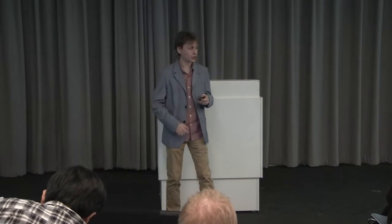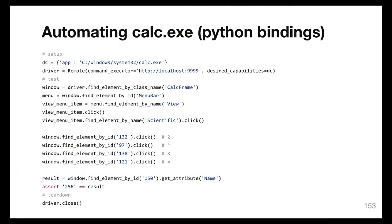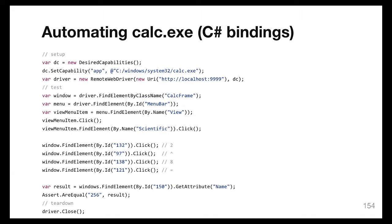Here is a code sample we used to record the demo, written in C#. And here is the same code written in Python. This is one of the benefits of the Selenium-based approach — we have different teams in our company and each team prefers their own language for automation. One team can use Python, another can use C#, and there's almost no difference.